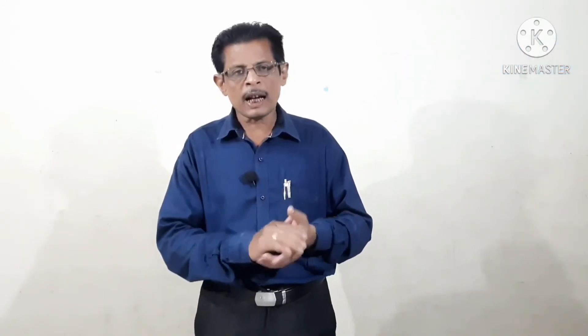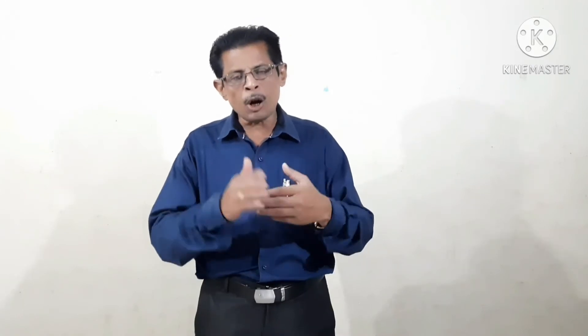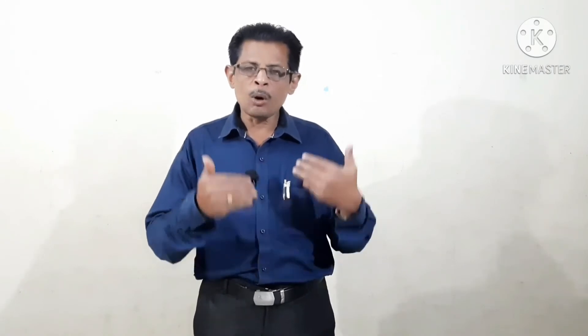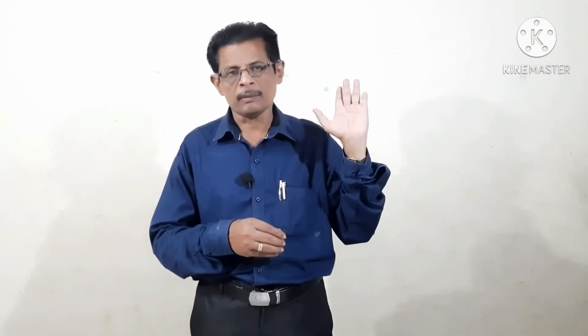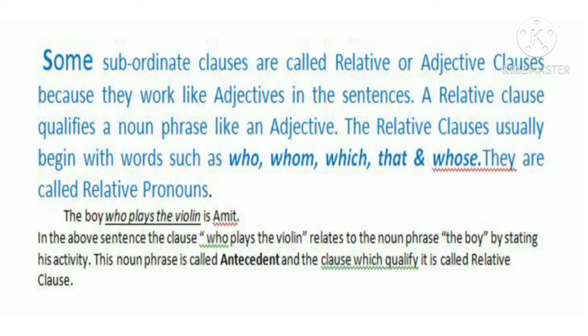In case of relative clause, it functions as an adjective. Now we will see what is relative clause and what is its definition. Some subordinate clauses are called relative or adjective clauses because they work like adjectives in the sentences. A relative clause qualifies a noun phrase like an adjective. The relative clause usually begins with words such as who, whom, which, that, and whose.